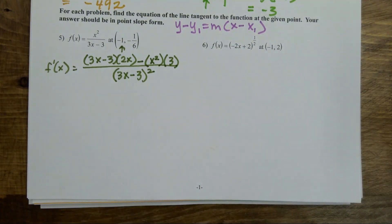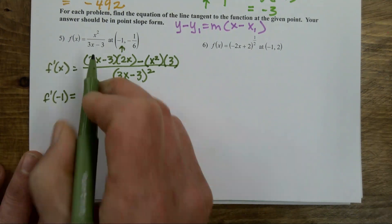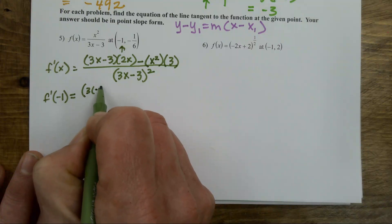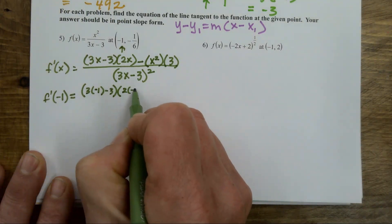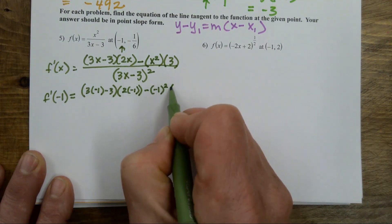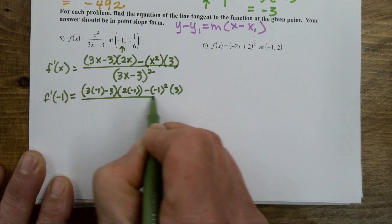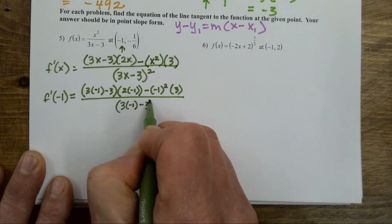Not going to do any cleanup on this one at all. I'm just going to plug negative one in right away. So f prime of negative one means: three times negative one minus three, times two times negative one, minus negative one squared times three, all over three times negative one minus three, quantity squared.